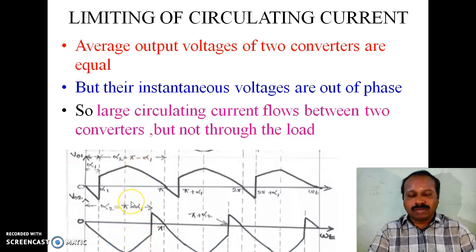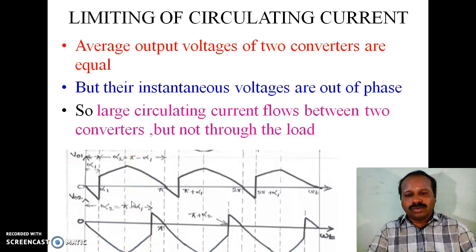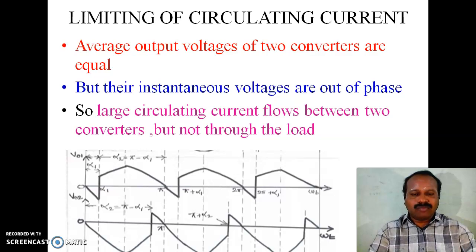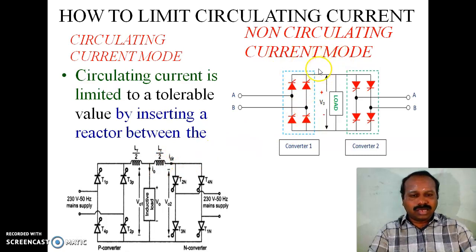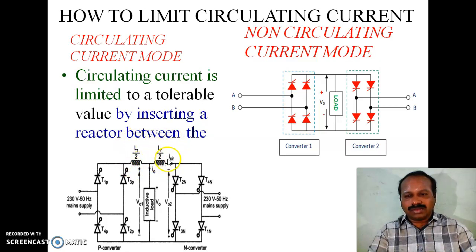The instantaneous values are different but the average values are the same. So a large circulating current flows between the two converters, but this circulating current does not flow through the load. To limit this circulating current, unlike non-circulating current mode which has no reactor, here a current-limiting reactor is inserted between the converters. The circulating current is limited to a tolerable value by this circulating current reactor.